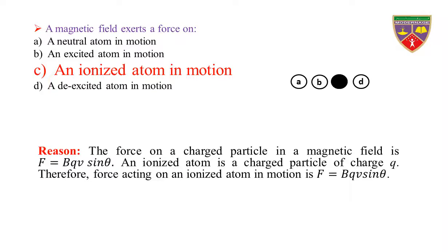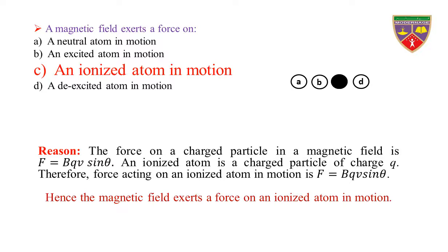Reason: The force on a charged particle in a magnetic field is F = BQV sinθ. An ionized atom is a charged particle of charge Q. Therefore, the force acting on an ionized atom in motion is F = BQV sinθ. All the other options consist of neutral atoms. Hence, the magnetic field exerts a force on an ionized atom in motion.